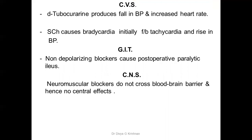Regarding other systems: taking D-tubocurarine as the prototype non-depolarizing blocker and succinylcholine as the prototype depolarizing blocker — D-tubocurarine produces a fall in BP and increased heart rate, whereas succinylcholine causes initial bradycardia followed by tachycardia and a rise in BP. For the GIT, non-depolarizing blockers can cause post-operative paralytic ileus due to paralysis of the rectus abdominis muscle, resulting in constipation. Neuromuscular blockers do not cross the blood-brain barrier and hence have no central effects.